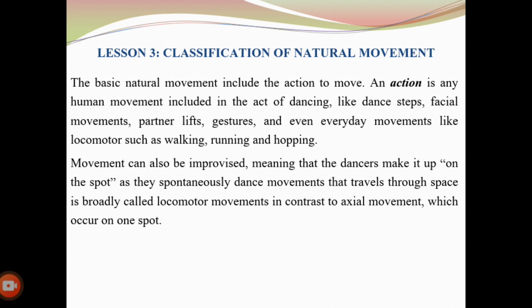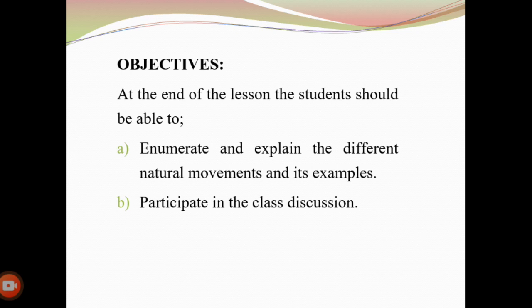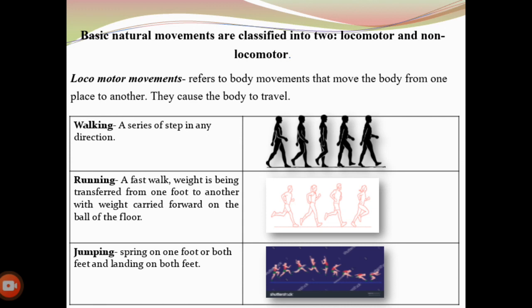Dancers may use movements that have been choreographed or traditional dances taught by others. Depending on the dance style or the choreographer's decision, dancers may also revise or embellish movements they have learned from others. Movements can also be improvised — meaning that dancers make it up on the spot. Dance movements that travel through space are broadly called locomotor movements, in contrast to axial movements which occur on one spot. The basic natural movements are classified into two: locomotor and non-locomotor movements.